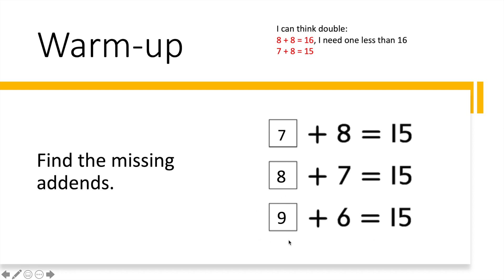So the nine goes here. We were talking about a pattern: eight, seven, six on one side, and then seven, eight on the other. The next number would be nine. Just something to think about — what would be the next number sentence? Ten plus five equals fifteen.